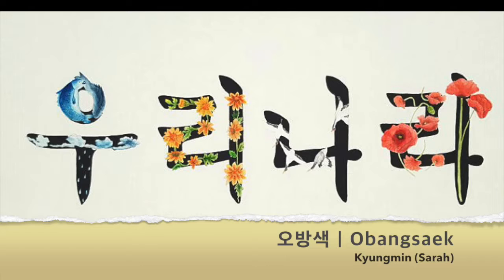This artwork is all about 오방색, five colors of Korea which are red, blue, yellow, white and black. These days, lots of people are losing the typical characteristic of their culture and Korea is one of them. I wanted to display the color because the colors are one of the main elements that show the uniqueness.